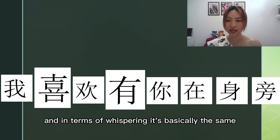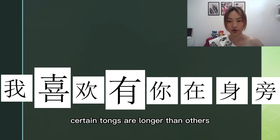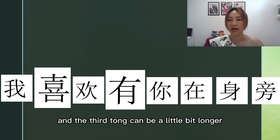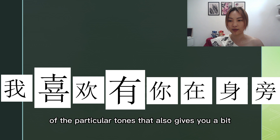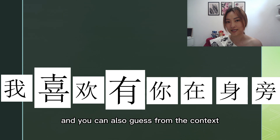In terms of whispering, it's basically the same, but there are other factors which help you. For example, certain tones are longer than others. Normally, the fourth tone is very short in duration, and the third tone can be a little bit longer. So depending on the intonation and also the length of the particular tones, that also gives you a bit of a clue. And you can also guess from the context.